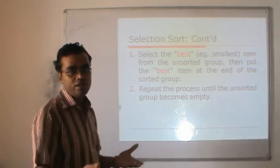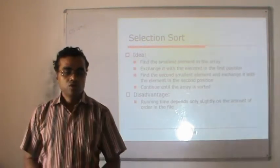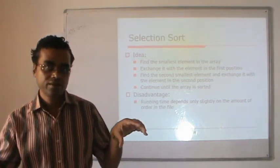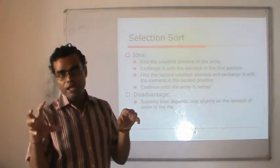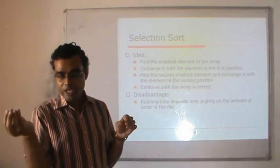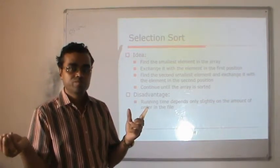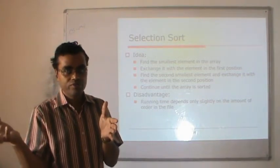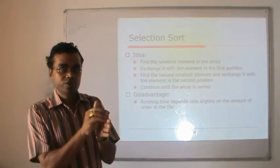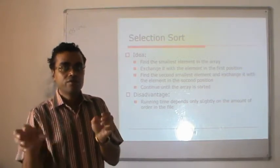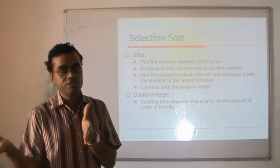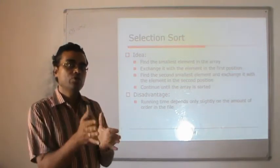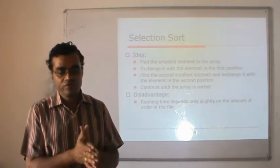The approach is: find the smallest element in the full array and exchange it with the element at the first position. In the second iteration, from the remaining 9 elements, find the smallest and exchange with the second position. Then from 8 remaining elements, find the smallest and place at the third position. This repeats until the data is fully sorted.